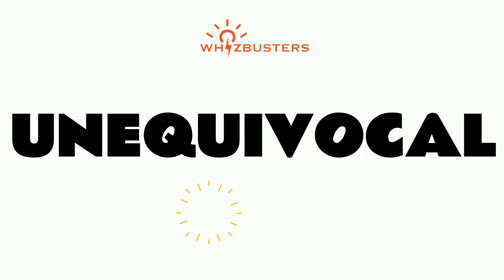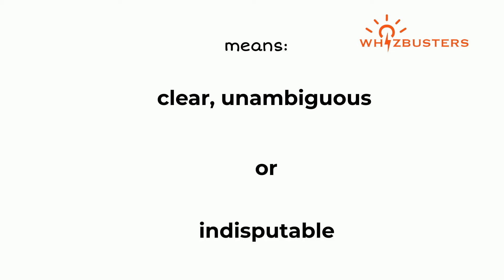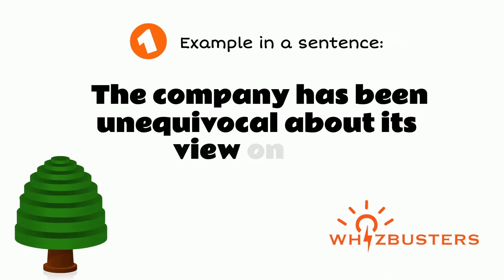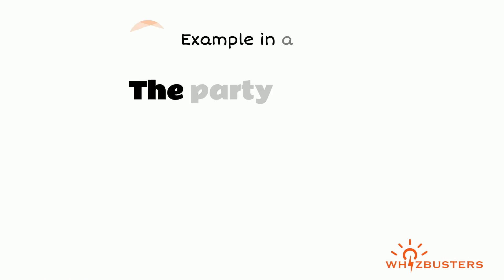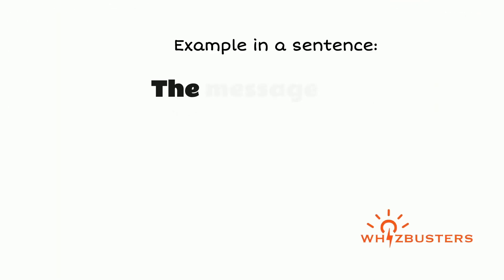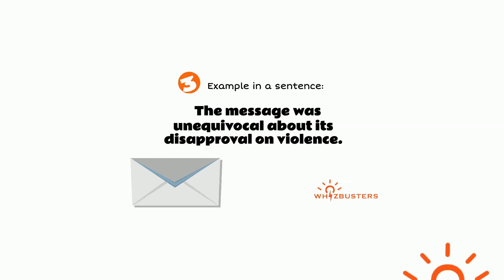Unequivocal means clear, unambiguous, or indisputable. For example: 'The company has been unequivocal about its view on the environmental issue.' 'The party received unequivocal support from the organization.' 'The message was unequivocal about its disapproval of violence.'